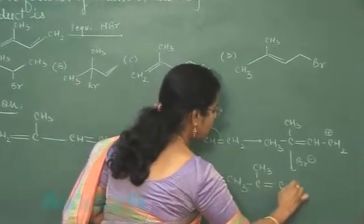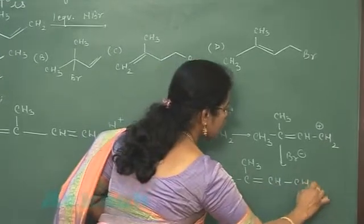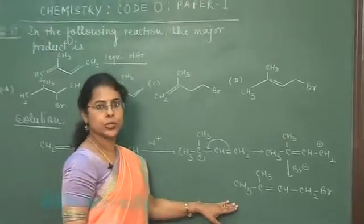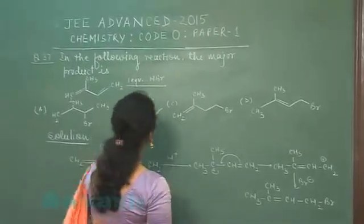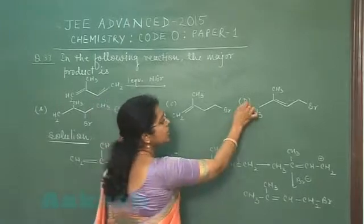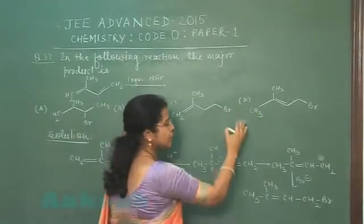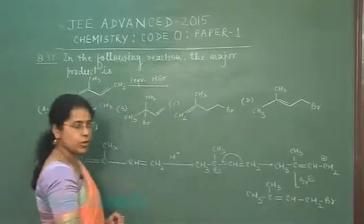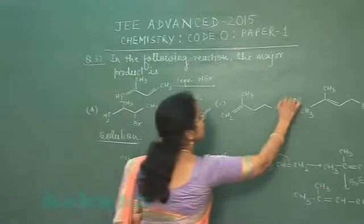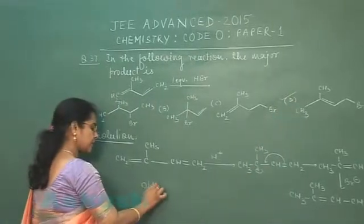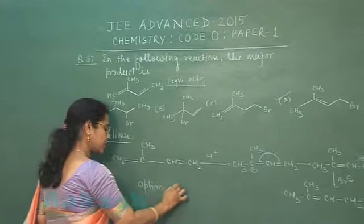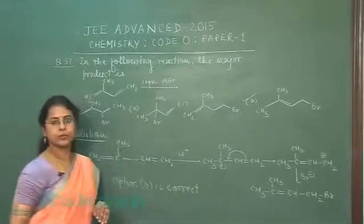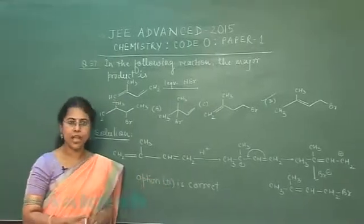The product of this reaction should have a structure similar to what is derived. Looking at the four given options, option D has a structure similar to the answer obtained from this equation. Therefore, option D is the correct answer, and in this way we can find the answer to the question.